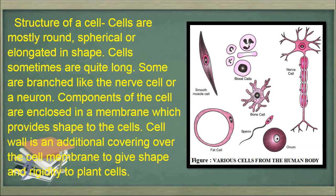In this picture you can see various types of cells. Smooth muscle cells are spindle in shape; blood cells are round in shape; nerve cells — the longest cells in our body — are long in shape; bone cells are irregular in shape; fat cells are again spherical and round; sperm, which is a gamete, is long; and ovum is a spherical cell.